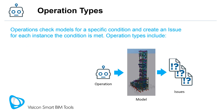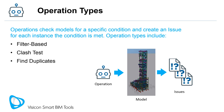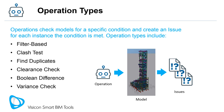Operations check models for a specific condition and create an issue for each instance the condition is met. Operation types include Filter Based, Clash Test, Find Duplicates, Clearance Check, Boolean Difference, and Variance Check.